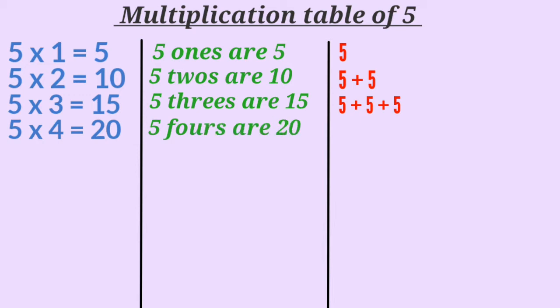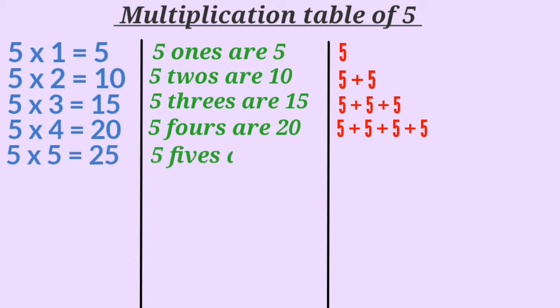Here, how many times are we adding number 5? Yes, four times. 5 multiplied by 5 is 25, or 5 fives are 25.